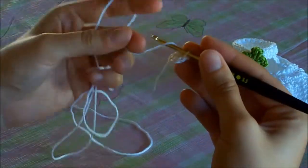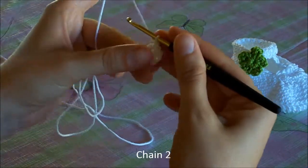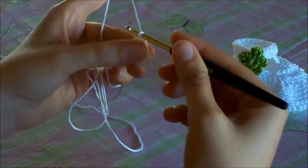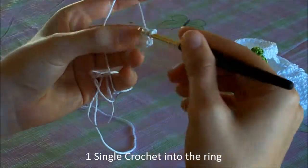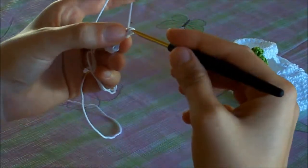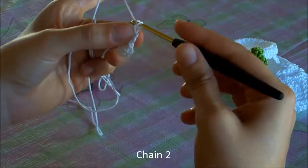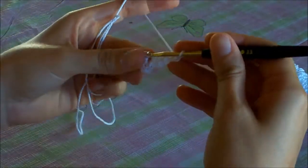We are going to repeat the procedure 4 times. We start with chain 2, single crochet into the ring, chain 2 and slip stitch into the ring.